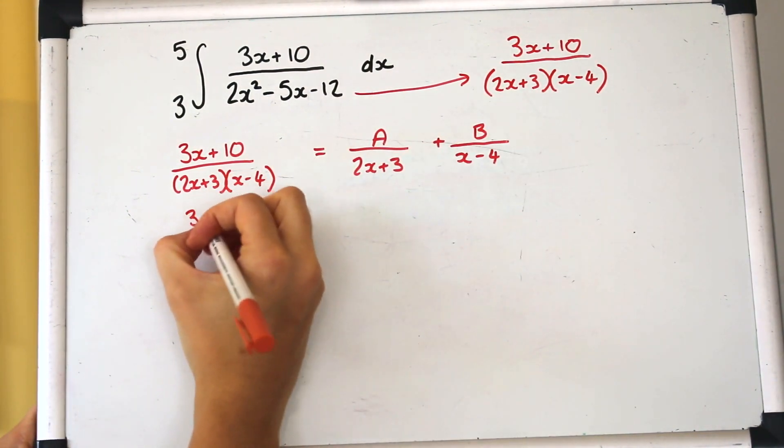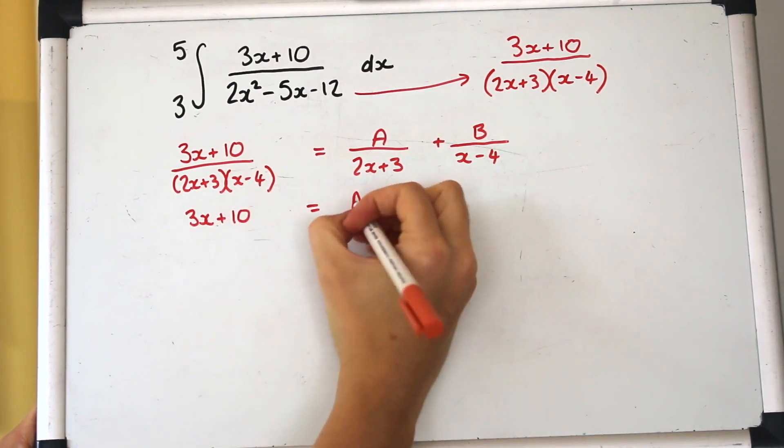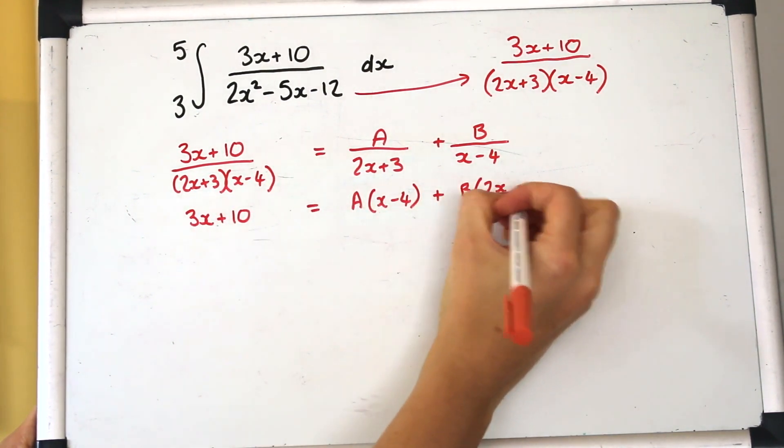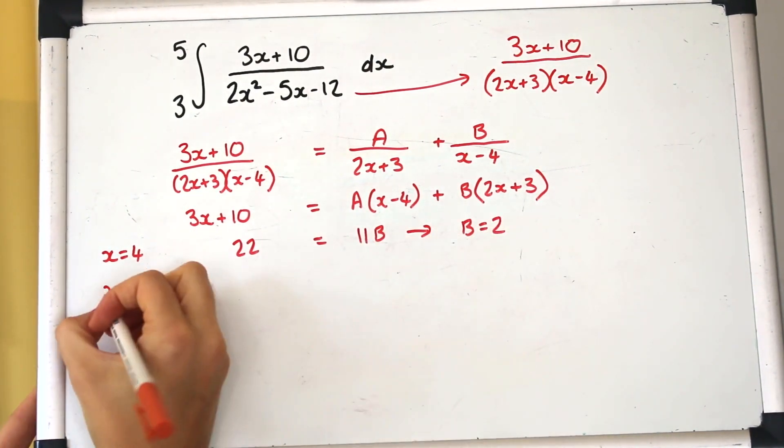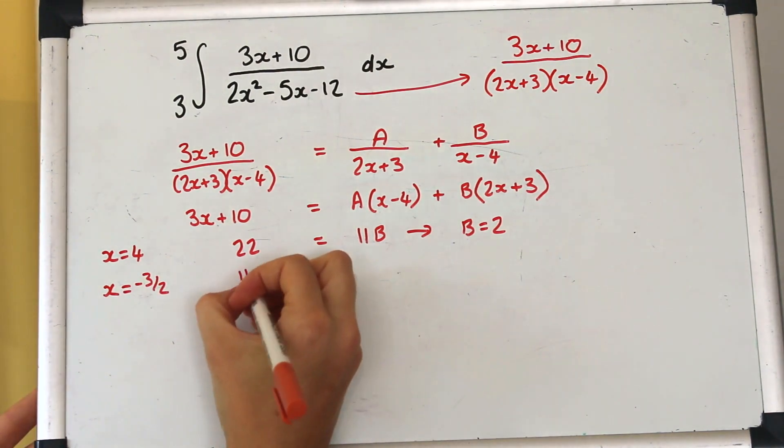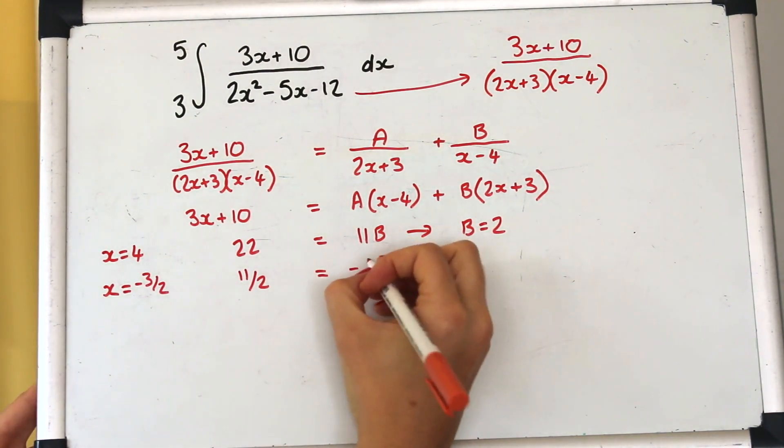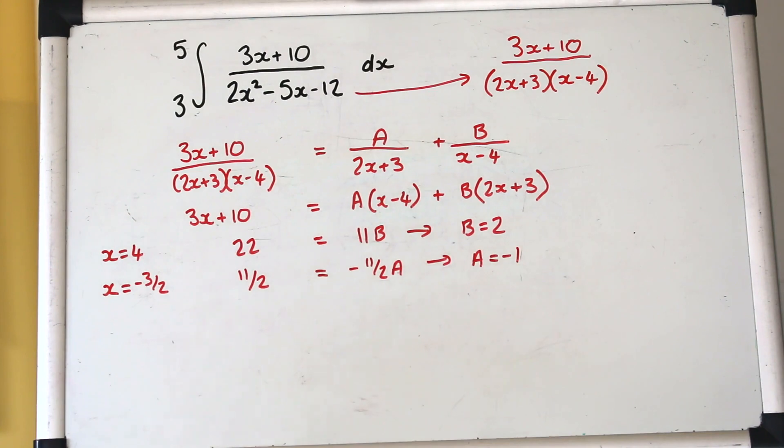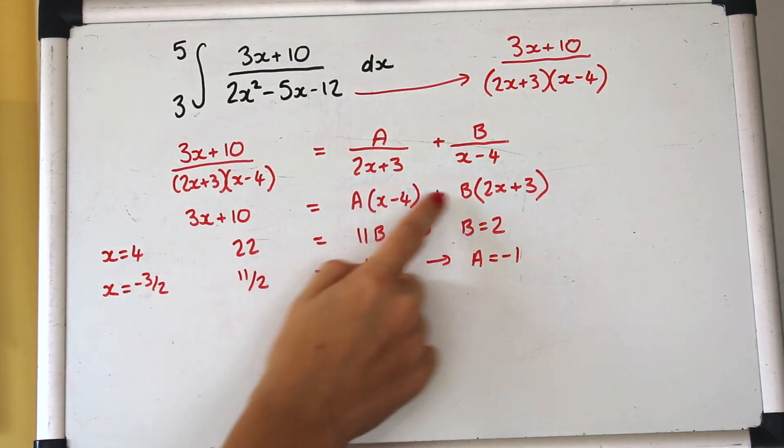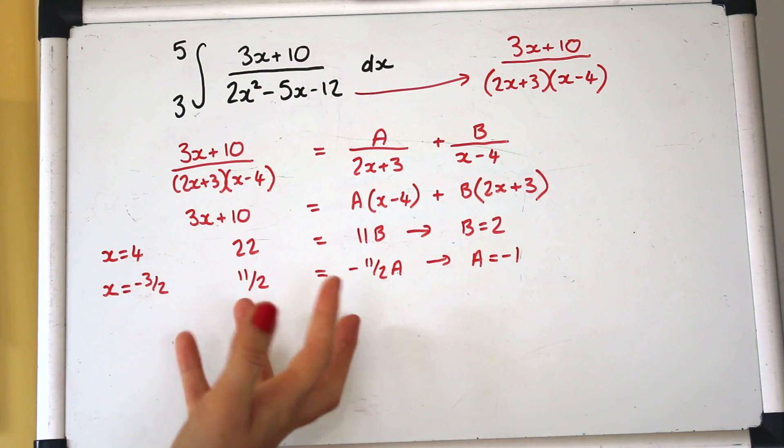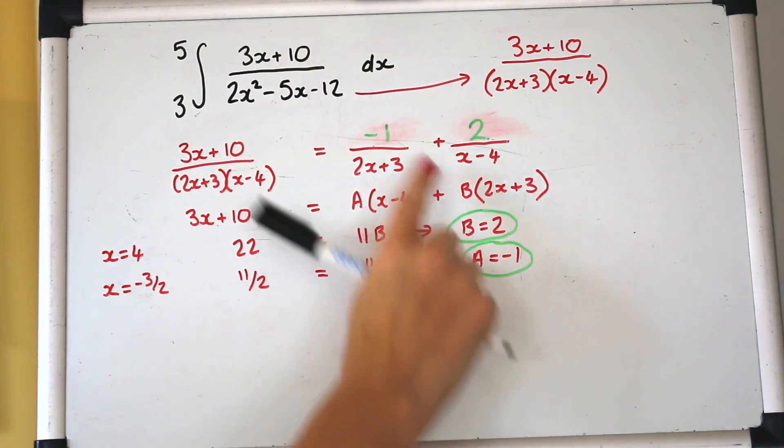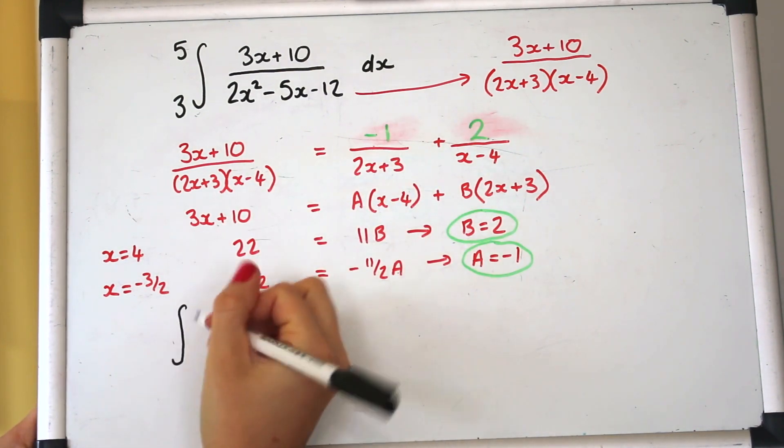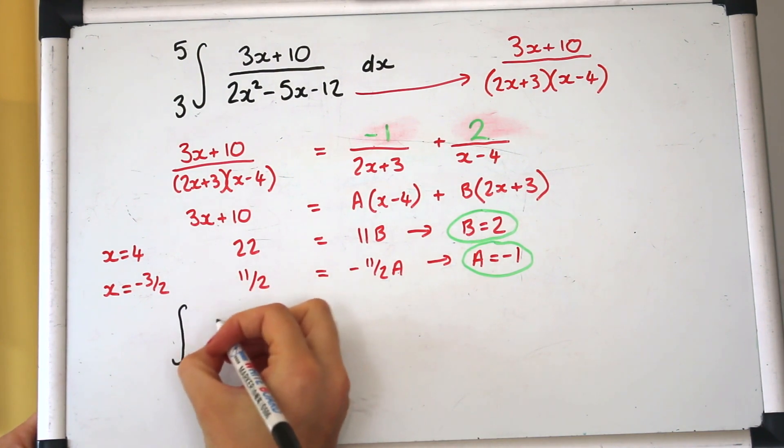Okay so partial fractions here we go. Just to say I'm choosing values of x to force things to be zero because I find that easier. That is a horrible fraction and I did just pop that into the calculator to get the 11 over 2. Okay so putting that back into the original question I'm going to rewrite this using the partial fractions.